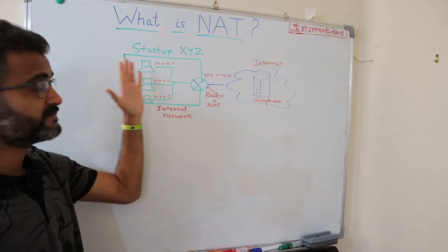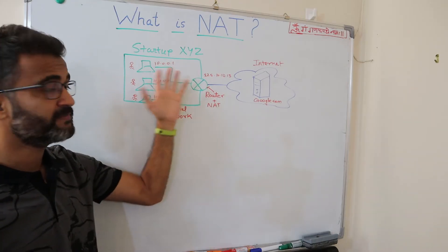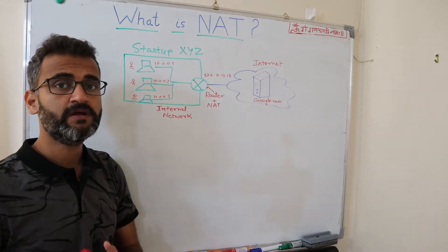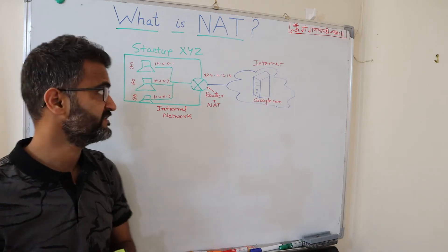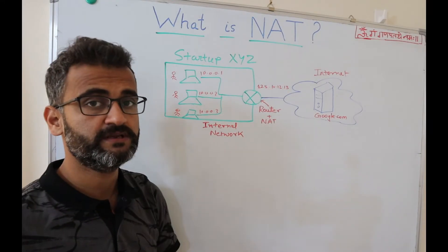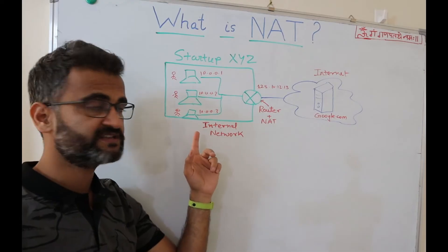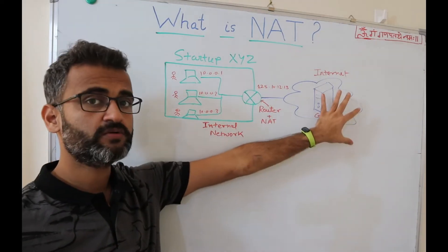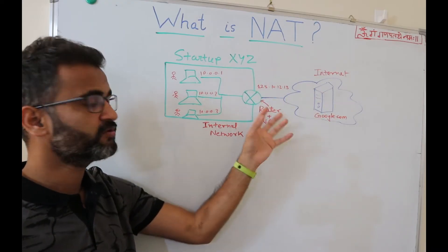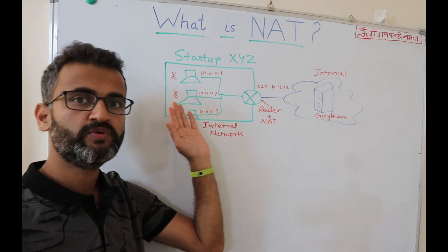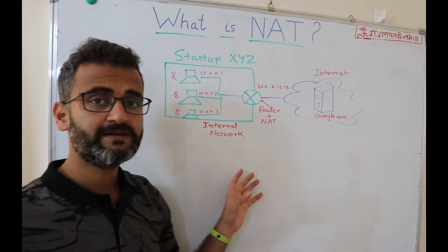Now suppose if these developers want to Google something, they have to access the internet via this router which is also acting as a Network Address Translator. These requests go to the NAT device, which maps these private addresses with the publicly available IP address registered for startup XYZ — for example, 125.10.12.13. With this address, the request goes to the Google server and gets the information back. When the information comes back, the NAT device passes it on to whichever private machine requested it. This is a basic understanding of NAT.